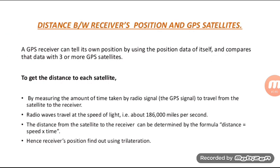To determine the distance between the receiver's position and GPS satellites, a GPS receiver uses position data from 3 or more GPS satellites and measures the time taken by radio signals to travel from the satellite to the receiver. Radio waves travel at the speed of light, approximately 186,000 miles per second. Distance is determined by the formula: distance equals speed multiplied by time.